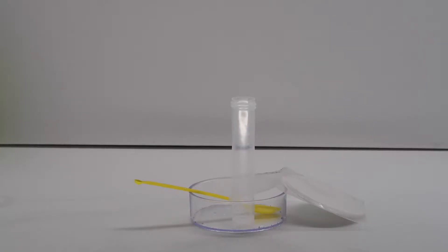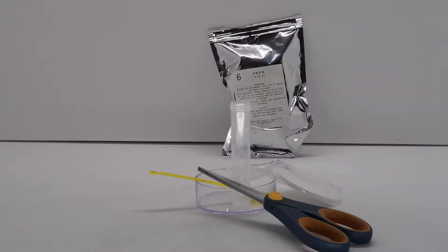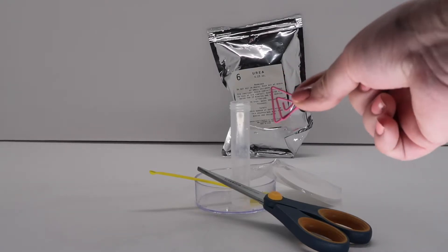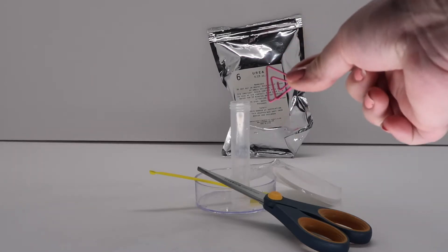Ingredients needed from kit: Packet 6 which is the urea. Scissors, a stapler or something to hold the paper together. I'm going to be using a paper clip. Water.